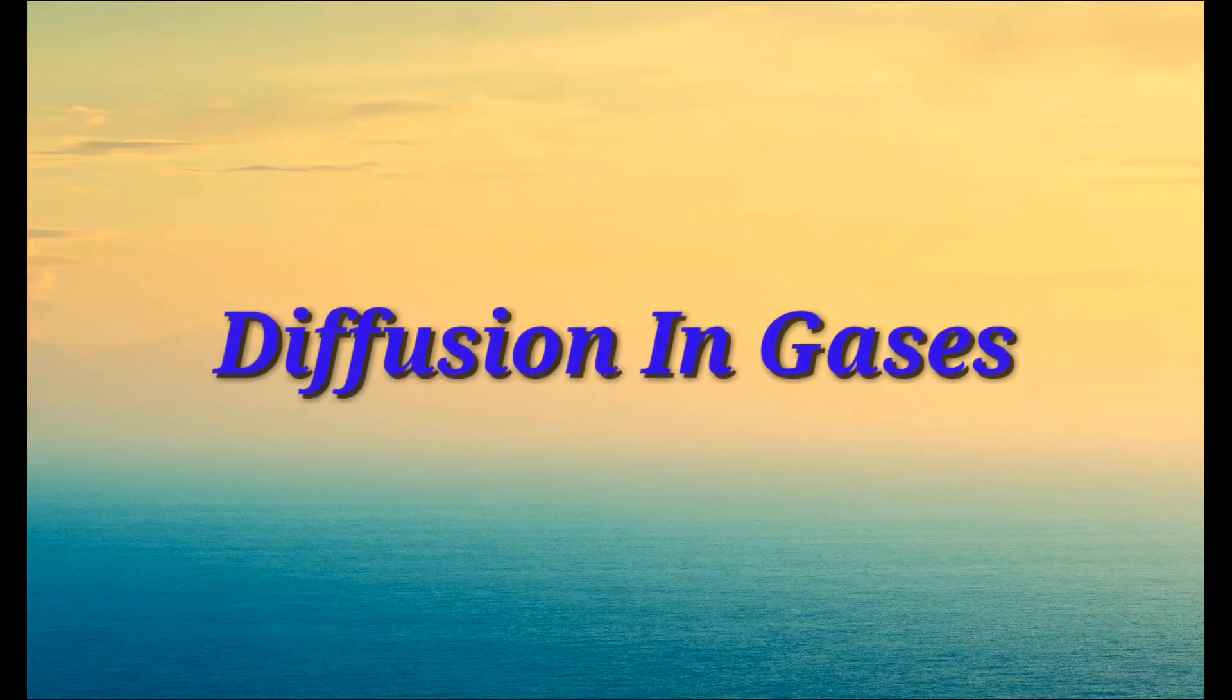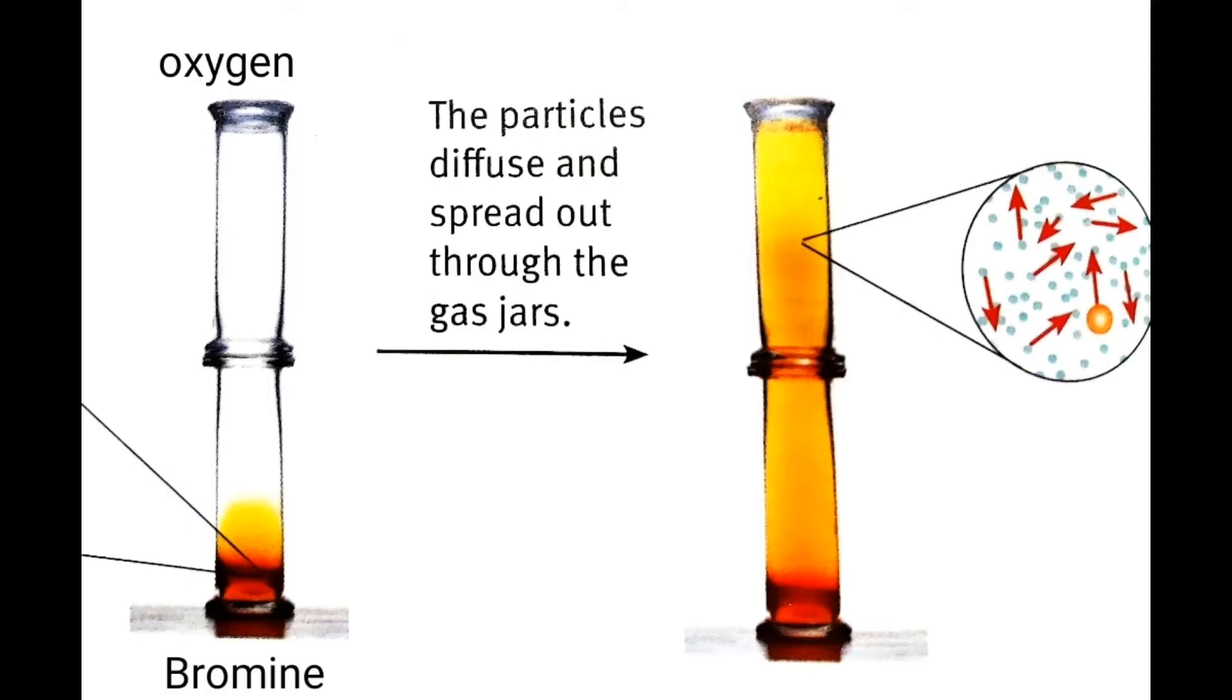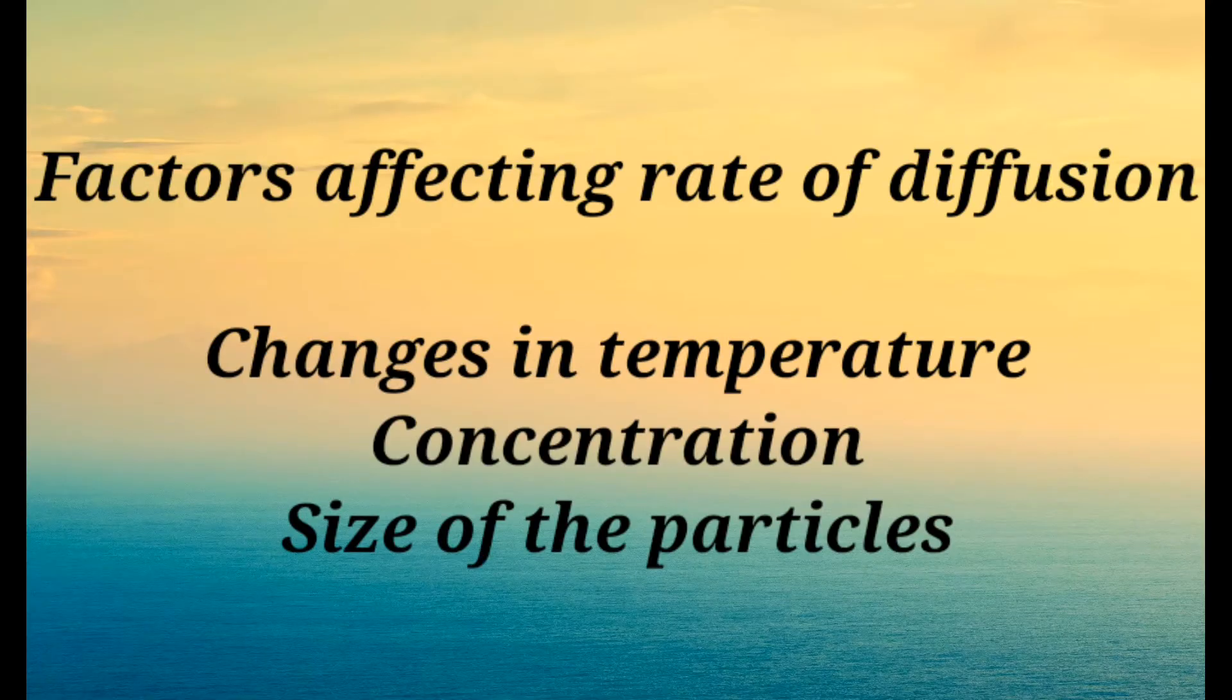Diffusion in gases. A gas jar containing oxygen is placed on top of a gas jar containing bromine. The particles diffuse and spread out through the gas jars. The rate of diffusion can be affected by a number of factors such as changes in temperature, concentration and size of particles.